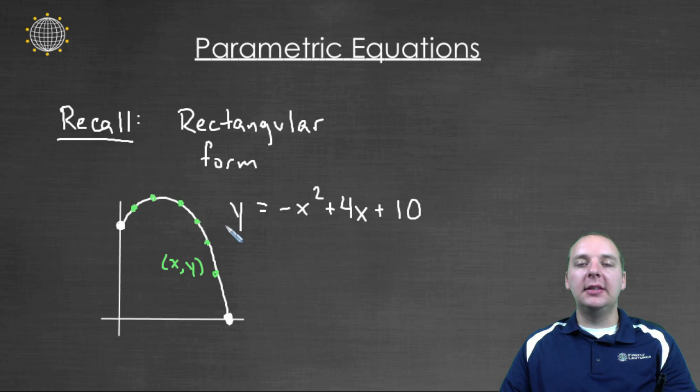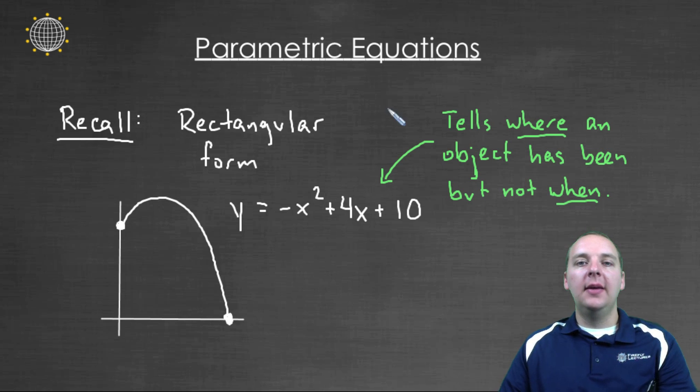But the thing I want to emphasize is that there's no order to these. We don't have to draw these left to right or right to left, they're just all on the graph all at once. There's nothing that says this point has to be drawn before this point or what not. So one way we could say that is that this tells where an object has been. If this is modeling maybe the movement or the position of an object through space, it'll tell where it's been, but it will not be able to tell when it's been there.